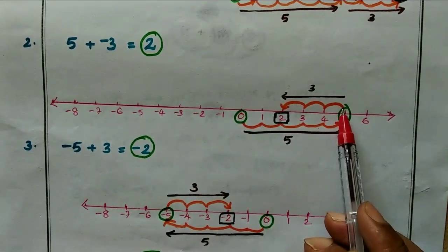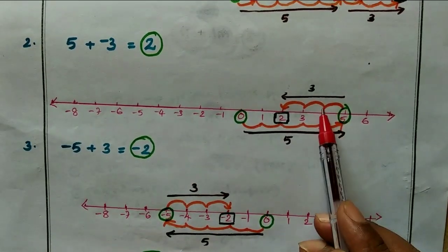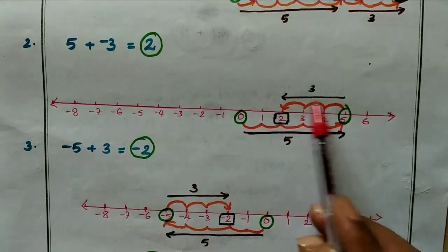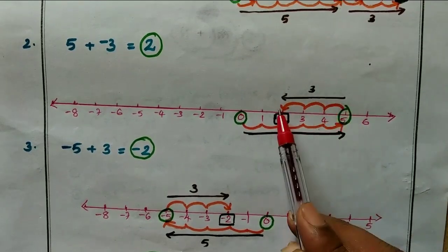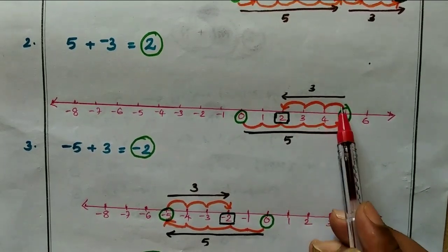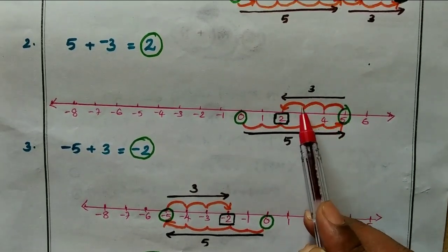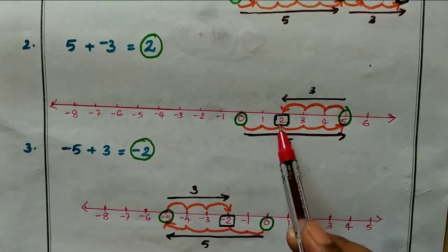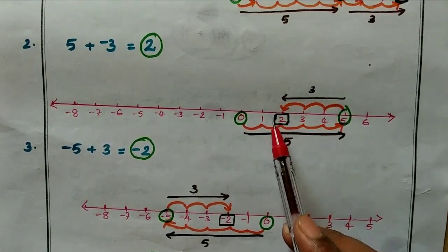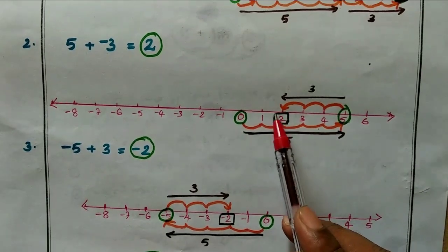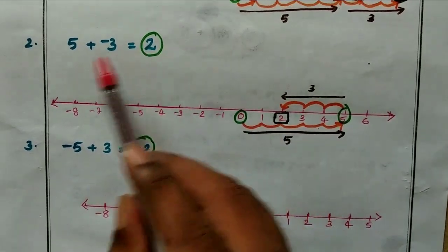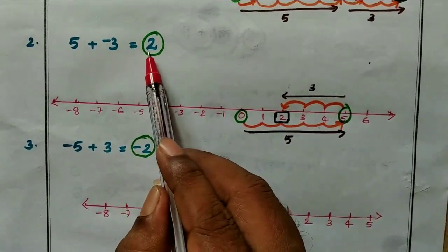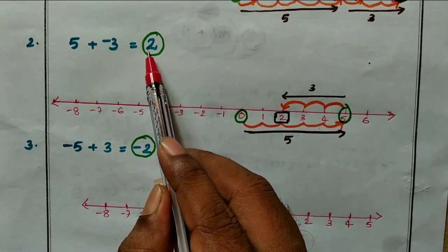Since we are adding negative 3, we move back (left) 3 steps: 1, 2, 3. So from position 5, moving back 3 places gives us position 2. The answer is 2. So 5 plus minus 3 equals 2.